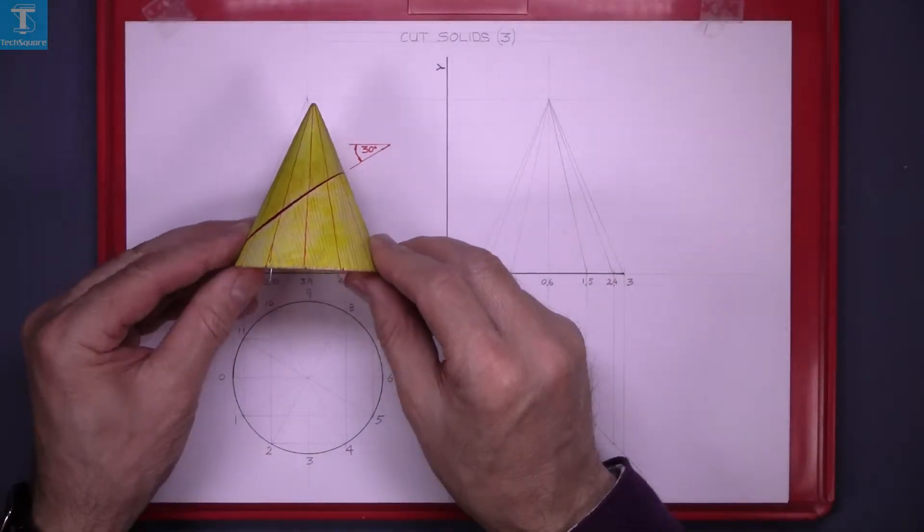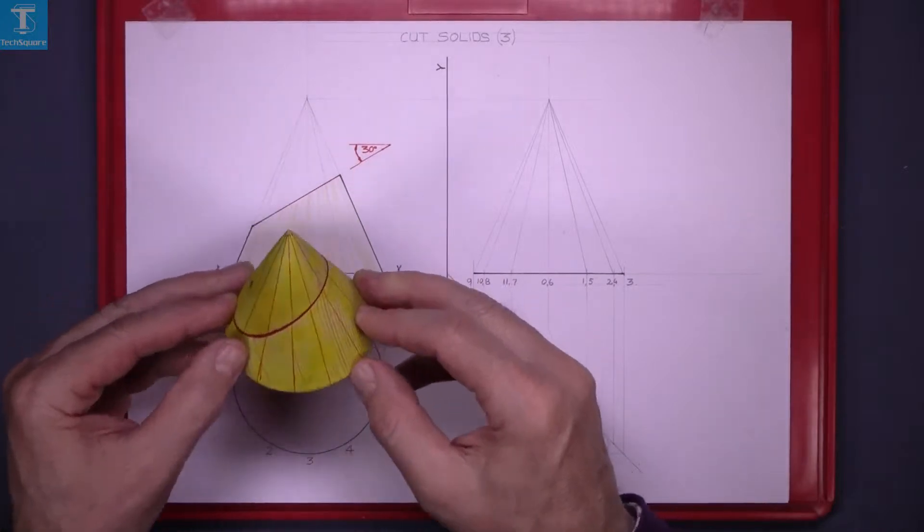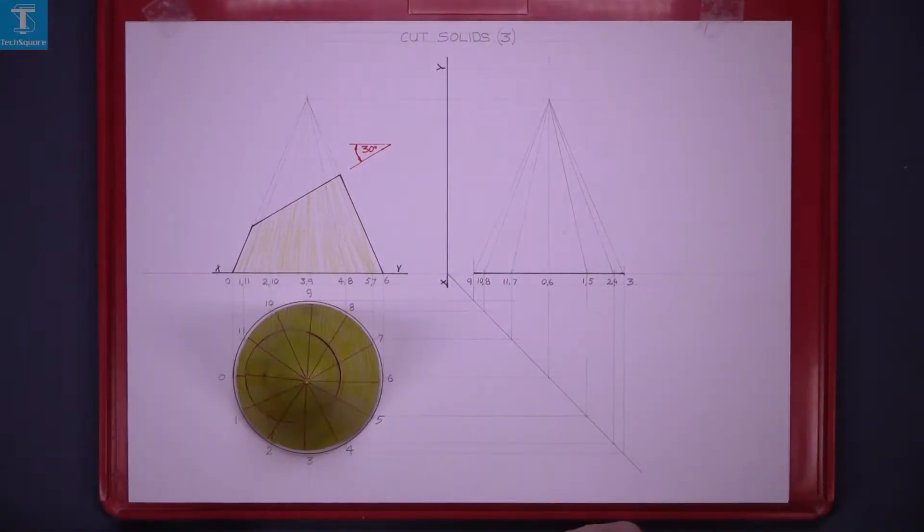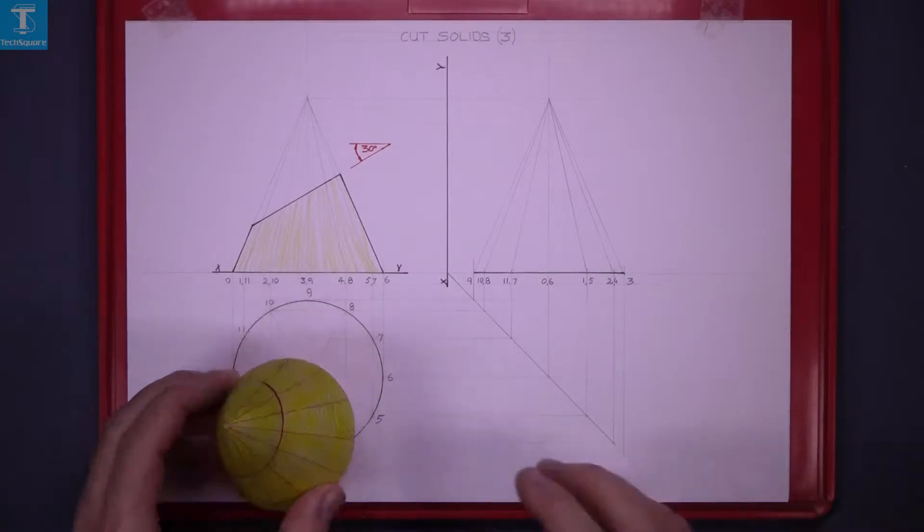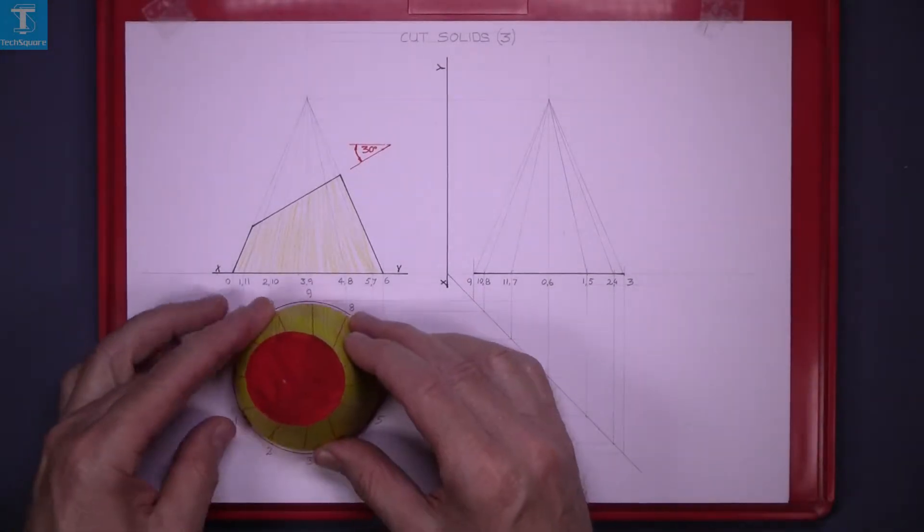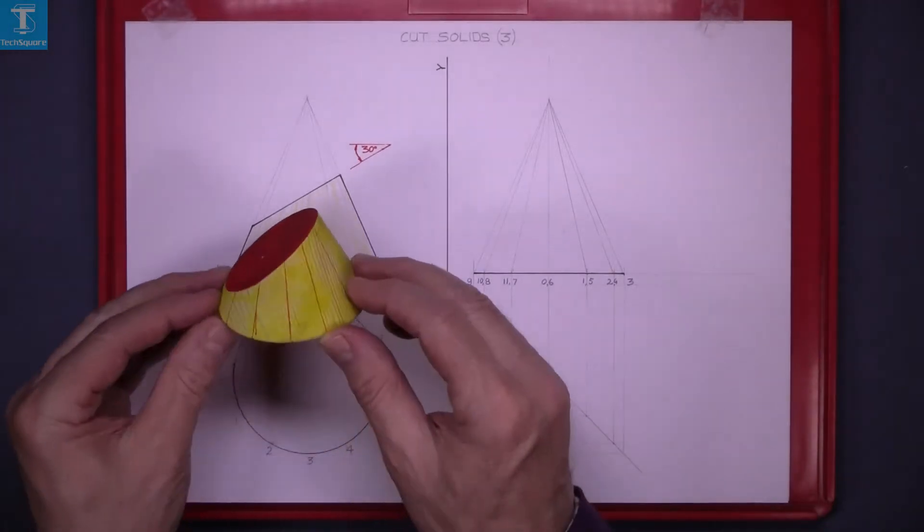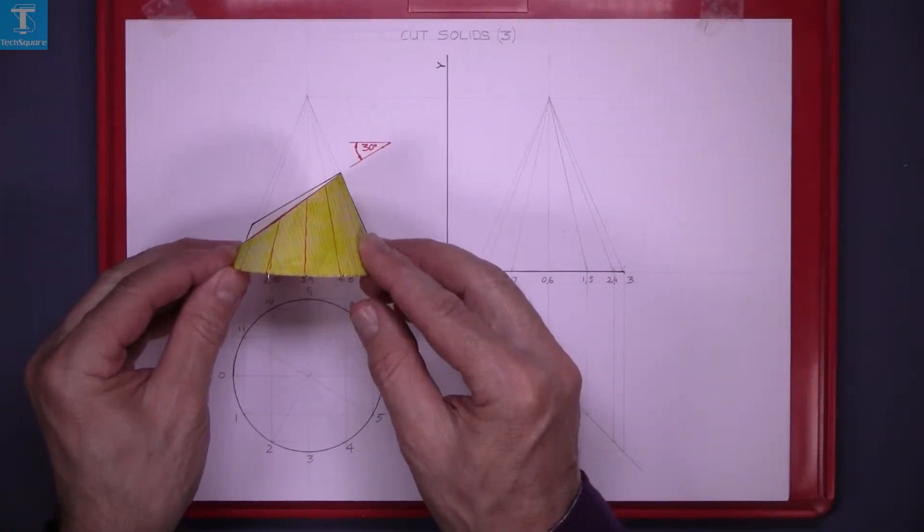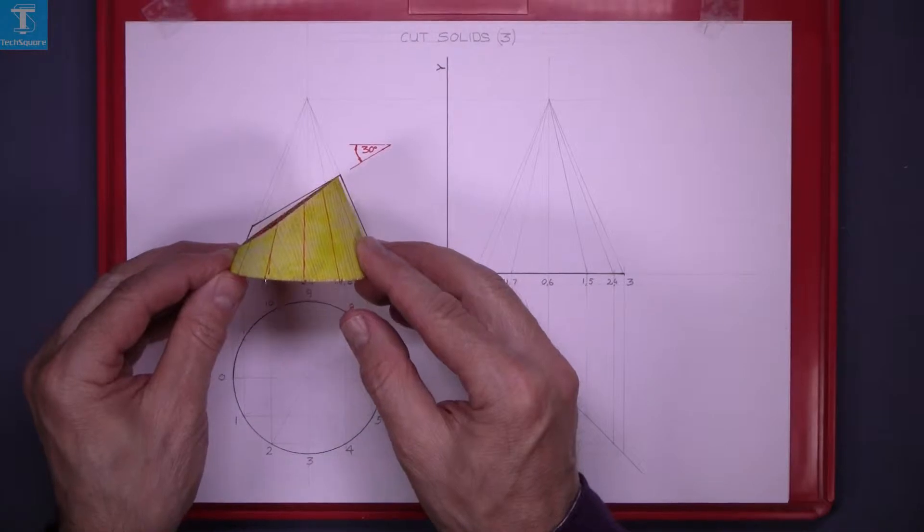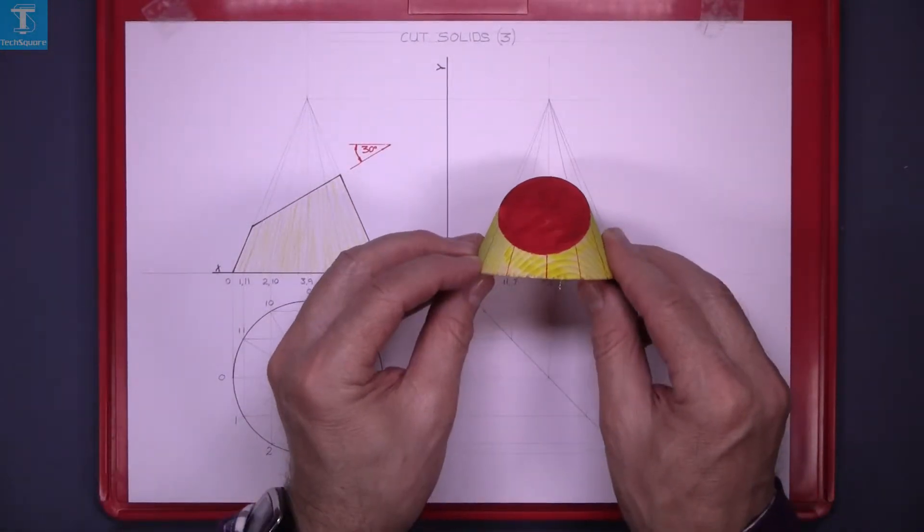This is what the cone looks like with the cut marked on it and that's the plan of it. Now that's the top view of it and that's the section we'll see. That's what the elevation looks like there, and in the end view that's what we expect to see there.